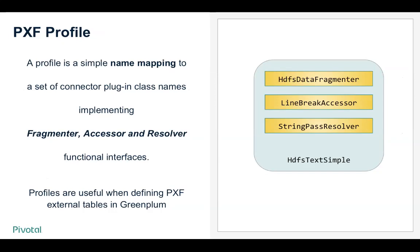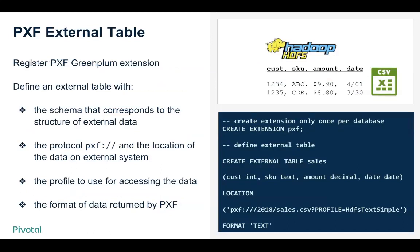To enable the data flow, we need specific implementations for these three interfaces. We introduced a concept called Profile, which is a logical name mapping between the three implementations that enable a specific flow. For example, the HdfsTextSimple profile consists of a fragmenter that knows how to break up a file from HDFS, a line-break accessor that reads files separated by line breaks, and a string-pass resolver that knows how to deserialize the data. To access a CSV file located in Hadoop, you first create the PXF extension for your database, then create an external table with a schema matching the CSV columns and appropriate data types, specifying the PXF protocol, the HDFS file location, and the profile such as HdfsTextSimple, with format set to text.